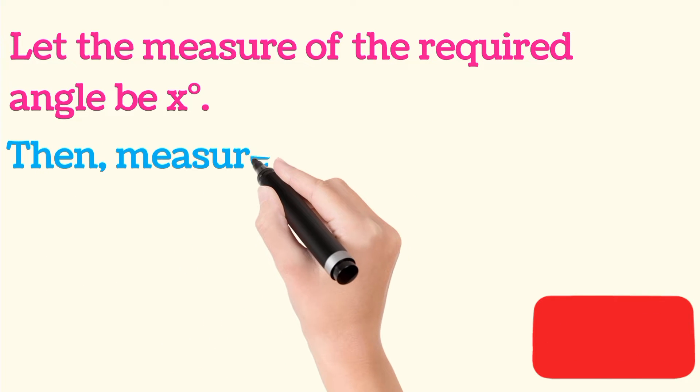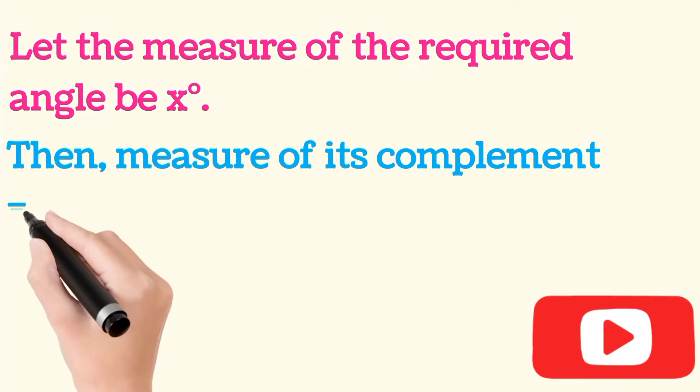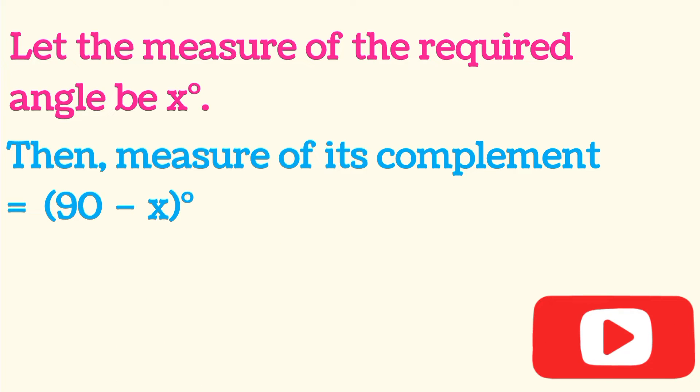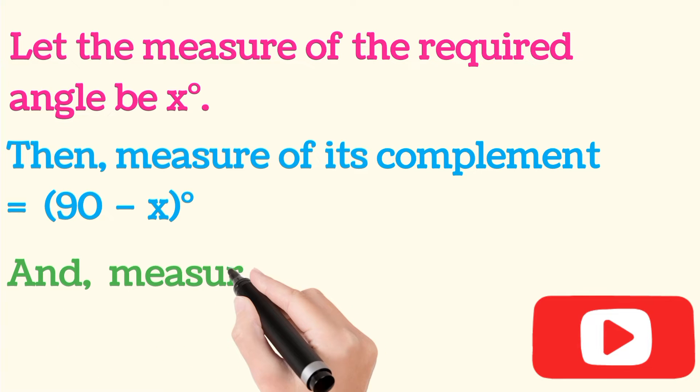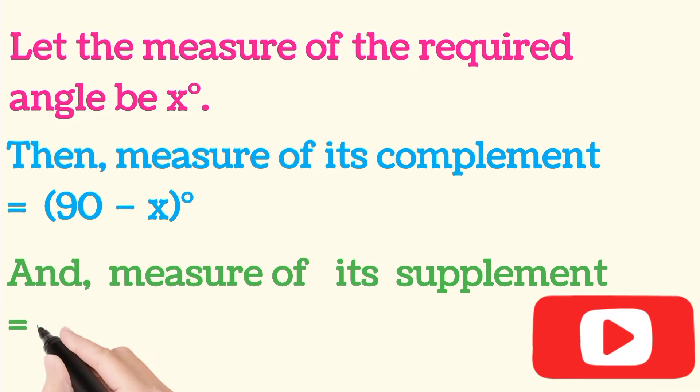Then the measure of its complement will be (90 - x) degrees, because the sum of complementary angles is 90 degrees. If one angle is x, then the other will be (90 - x). Similarly, the measure of its supplement angle will be (180 - x) degrees.